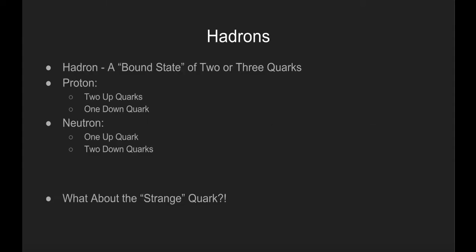Quarks only exist in what is called a bound state of two or three quarks known as a hadron. A proton is a hadron with two up quarks and one down quark, and a neutron is a hadron with one up quark and two down quarks.